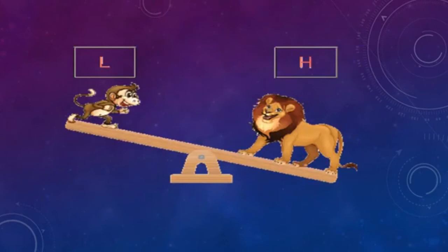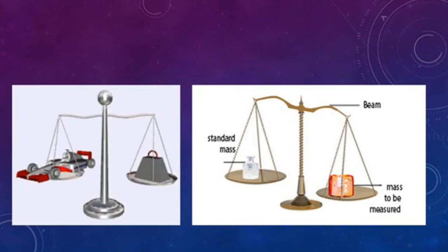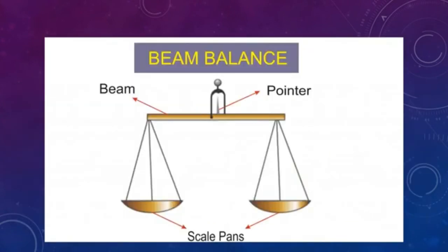In this picture, a lion is heavier than a monkey, but we cannot say what the exact weight of the monkey is just by looking. To know the mass of an object we must use a proper device — either a beam balance or an electronic balance. In an electronic balance, the device checks the mass and displays it on a seven-segment display. In a beam balance, a known mass is placed on one side and the unknown object on the other. The side with more mass goes downward and the lighter side goes upward.